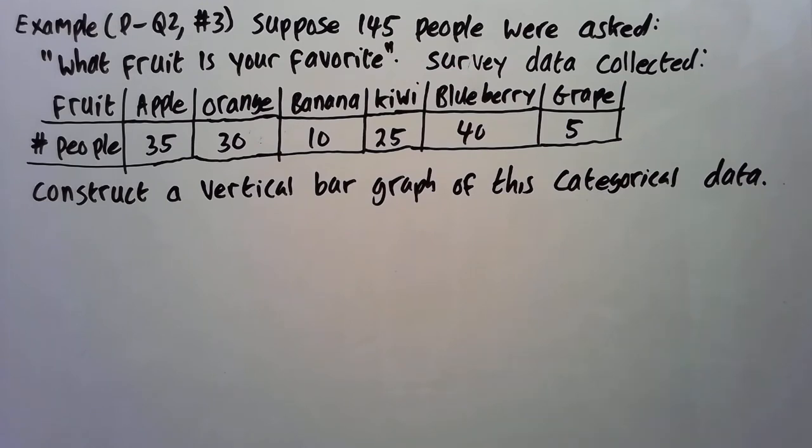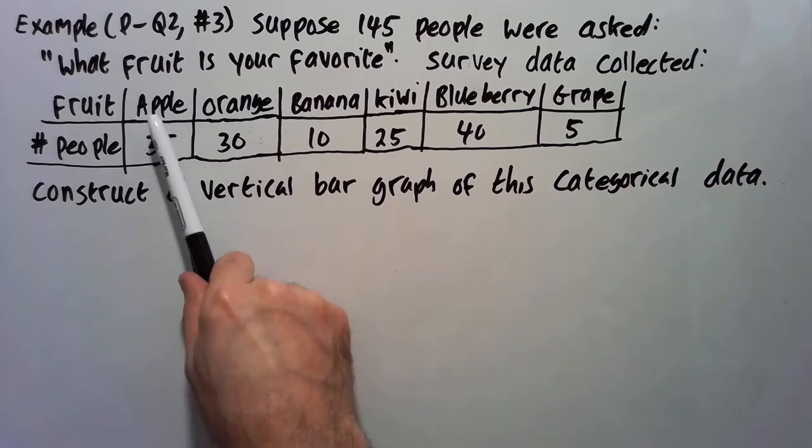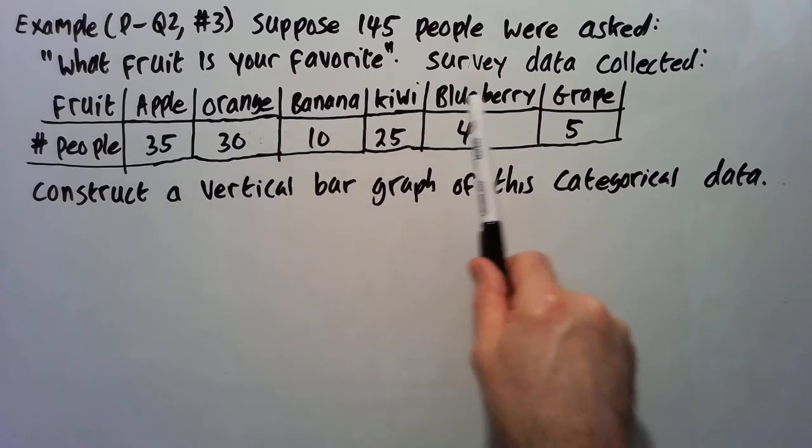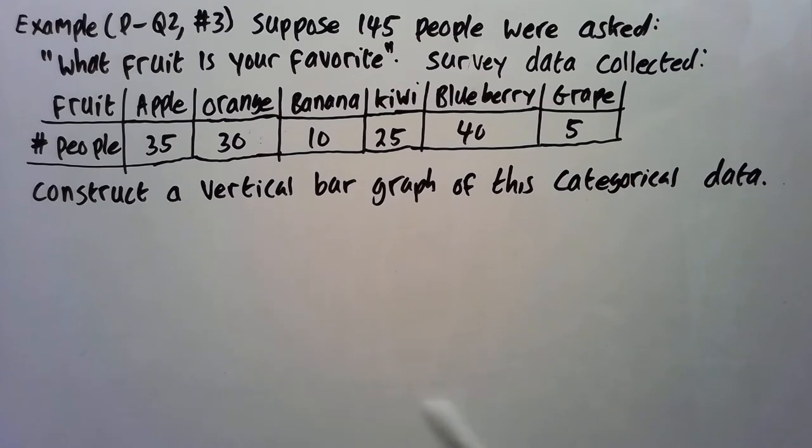Okay, so it's going to look like a histogram. But in place of the bins now, you're going to have apple, orange, banana, kiwi, blueberry, and grape. So we're going to put those on the x-axis. And it will have our frequencies on the y-axis.